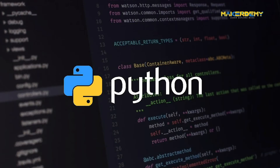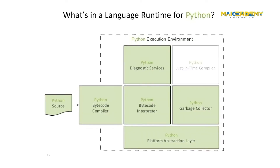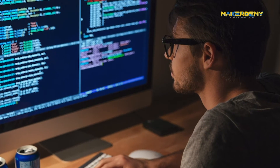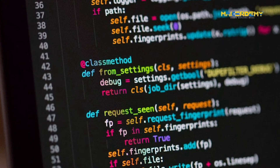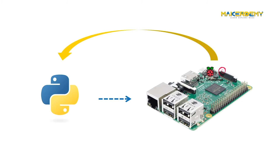Python is mainly a scripting language, which is a programming language that supports scripts. Scripts are programs written for a special runtime environment that automate the execution of tasks that could otherwise be executed one by one by a human operator. Scripting languages are often interpreted rather than compiled. In the electronics world, Python is used to program embedded systems like Raspberry Pi, where an interpreter runs on the Raspbian operating system to execute Python code, which might not be possible in the case of microcontrollers.